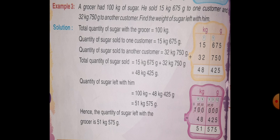First of all, you will add sugar sold to both the customers. So, first is quantity of sugar sold to one customer is equal to 15 kg 675 g and quantity of sugar sold to another customer is equal to 32 kg 750 g. Then, total quantity of sugar sold is equal to add 15 kg 675 g and 32 kg 750 g. And after addition, you will get 48 kg 425 g.